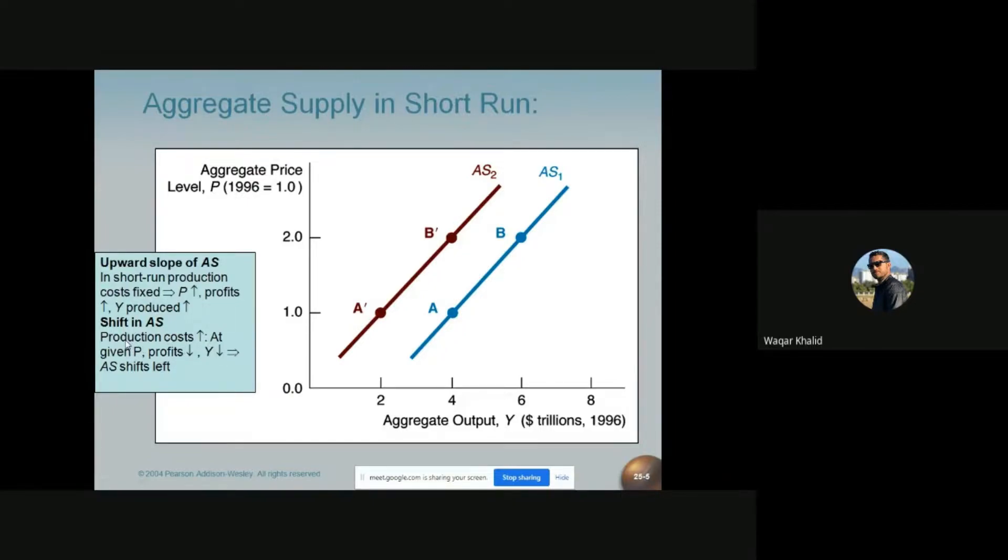So what will happen? The aggregate supply curve will shift to the left. It means that we are shifting from AS1 to AS2.